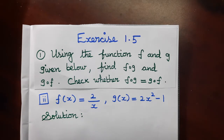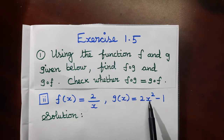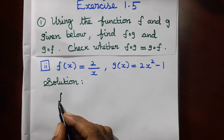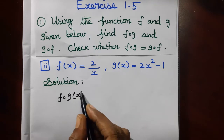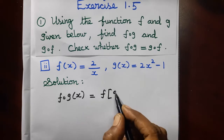So in this problem, we need to find f dot g and g dot f. f of x is 2 over x, and g of x is 2x squared minus 1. f dot g of x is equal to f of g of x.